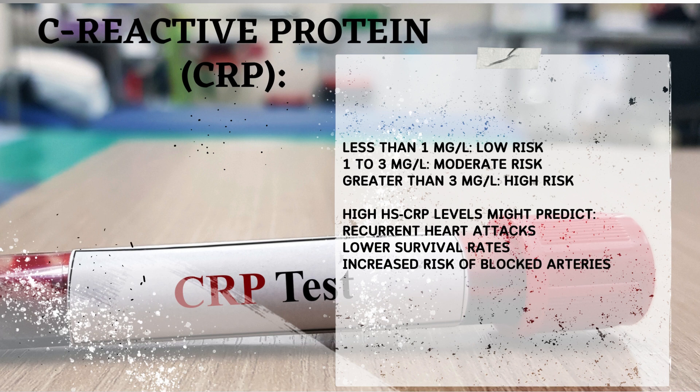hsCRP levels can be a valuable clue to your future risk of cardiovascular disease (CVD). A quick breakdown: less than 1 mg/L is low risk; 1–3 mg/L is moderate risk; greater than 3 mg/L is high risk. High hsCRP levels might predict recurrent heart attacks in people with angina or a previous heart attack, lower survival rates in patients with severe heart problems, and increased risk of blocked arteries returning after angioplasty.